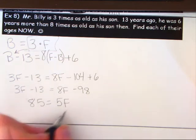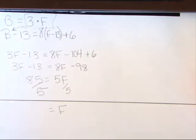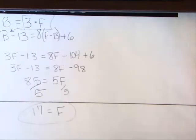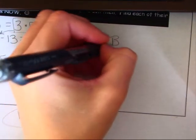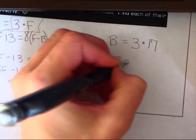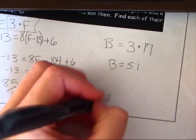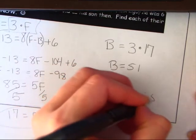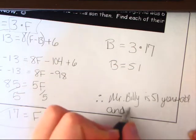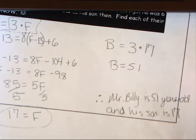Dividing both sides by 5 gives f = 17, so Fred is 17 years old. Plugging back in: Mr. Billy is 3 × 17 = 51 years old. Therefore, Mr. Billy is 51 years old and his son is 17.